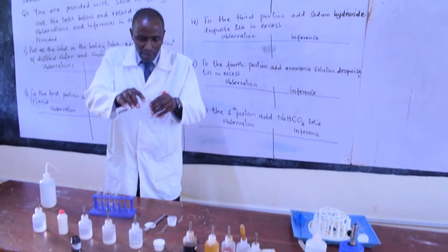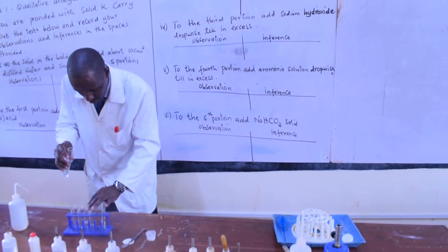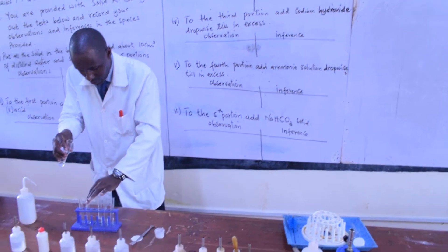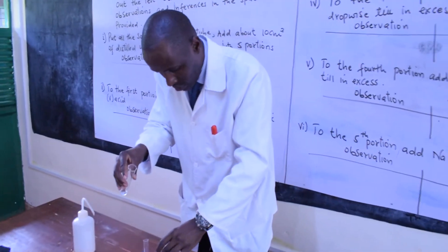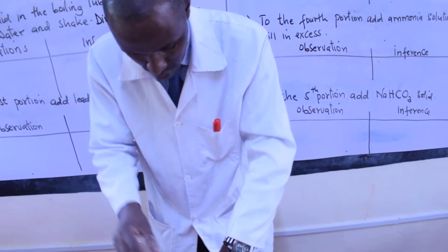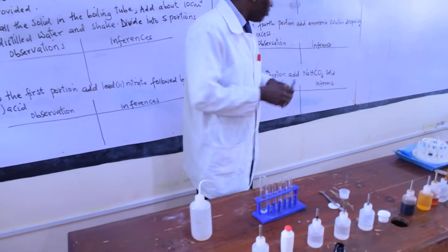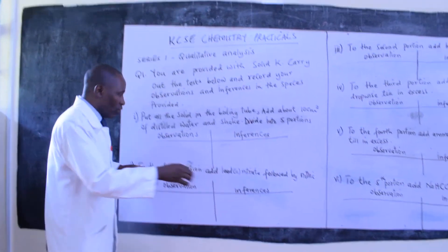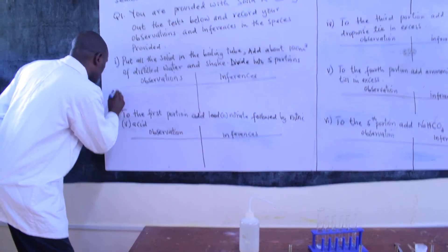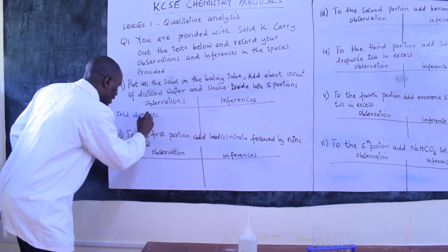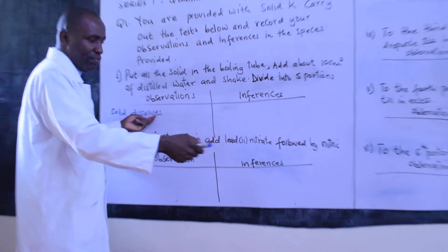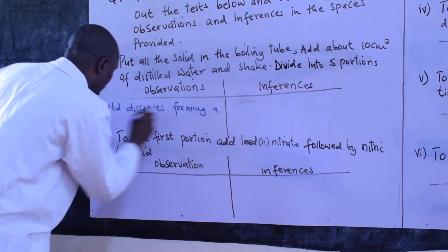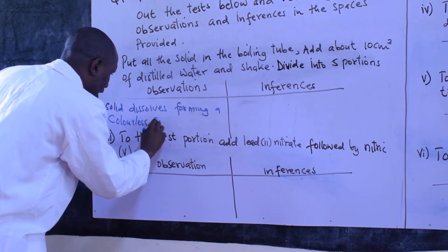The other instruction is to divide the solution into five portions. Let's do exactly that — we divide it into five portions. Now let's look at the observations. We've already noted that the solid has dissolved, so our first observation is: solid dissolves. It's also important to mention the color of the solution. Therefore, we are going to write: solid dissolves forming a colorless solution.